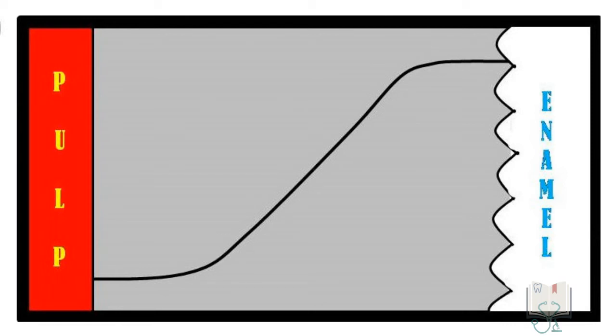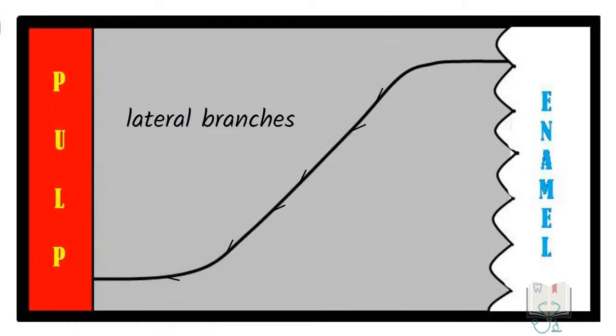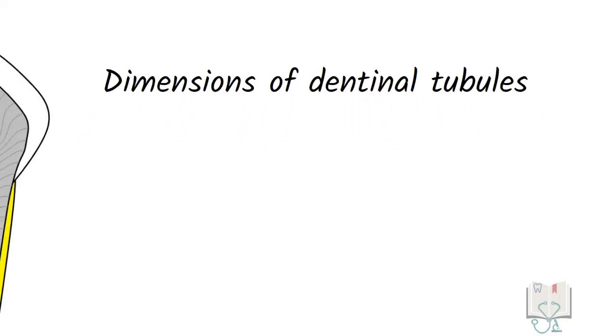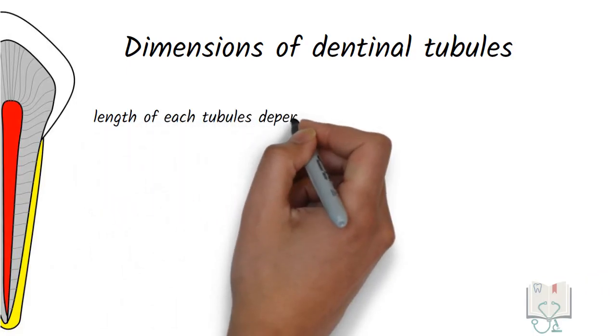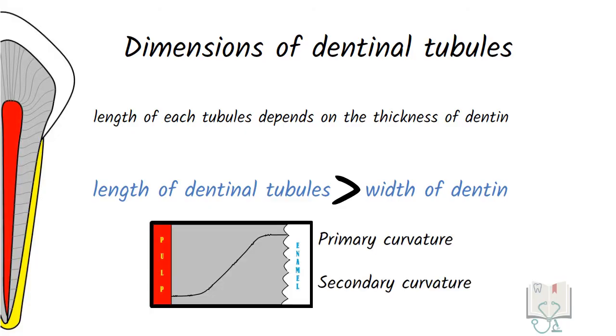Dentinal tubules have branches all along its course called the lateral branches and at the outer end called terminal branches. Now let us see the dimensions of dentine tubules. The length of each tubule depends on the thickness of dentine. Moreover they are longer than that because of the primary and secondary curvatures.